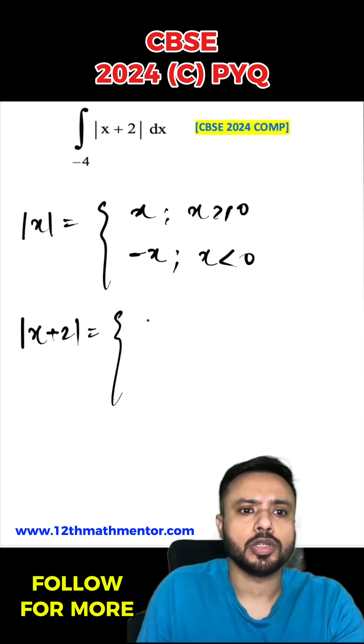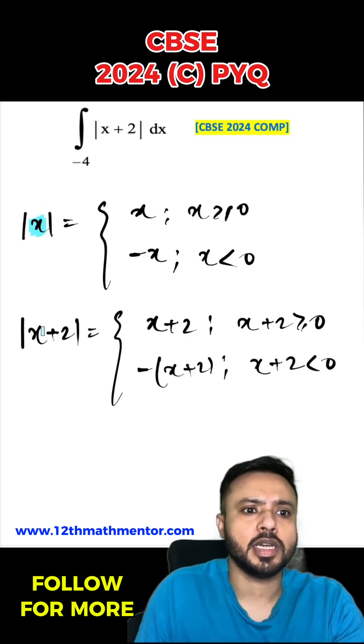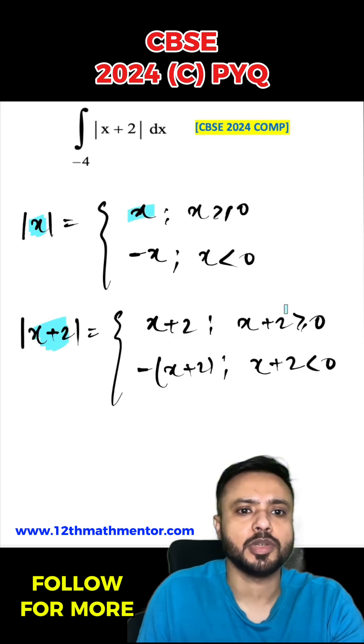Mod of x plus 2 is going to be positive x plus 2 when x plus 2 is greater than or equal to 0, and negative of x plus 2 when x plus 2 is less than 0. Basically, I have replaced this x with x plus 2, so all of these x will get replaced by x plus 2.